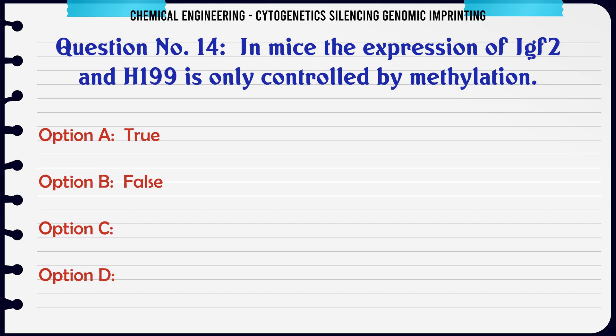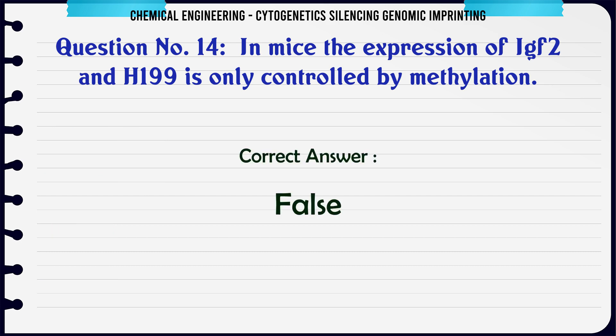In mice, the expression of IGF-2 and H19 is only controlled by methylation. A. True, B. False. The correct answer is B: False.